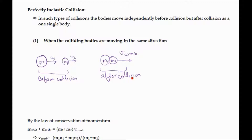In such type of collisions, the bodies move independently before collision, but after collision they move as a single body. Clearly, after the collision both bodies stick to each other and move as a single body. This type of collision has the maximum loss of energy.